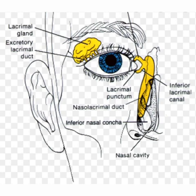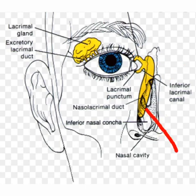Now we'll discuss the lacrimal drainage system. The lacrimal fluid secreted by the lacrimal gland is ultimately drained into the nose. The path through which the lacrimal fluid passes is known as the lacrimal drainage system. The parts of the lacrimal drainage system are: the punctum, canaliculus, common canaliculus, lacrimal sac, and nasolacrimal duct.